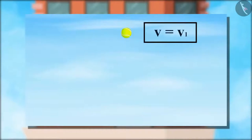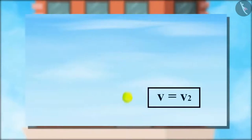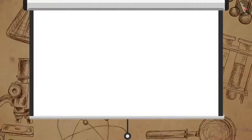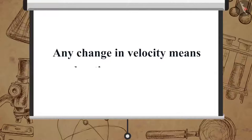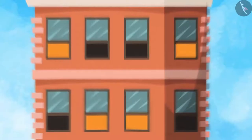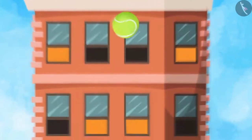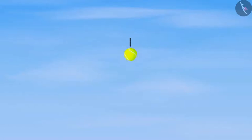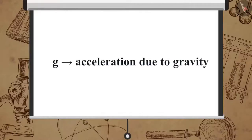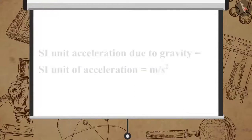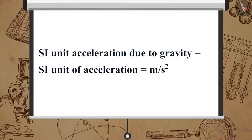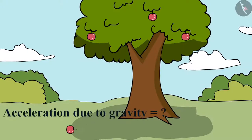In freefall, a change in the magnitude of velocity takes place due to gravity. As we know, any change in velocity means acceleration. So when an object is falling towards the Earth, an acceleration is involved, and that acceleration is due to the gravity of Earth. Thus we refer to this as acceleration due to gravity. It is denoted by g, and its SI unit is the same as that of acceleration: meter per second square. Now let us derive the formula for acceleration due to gravity.